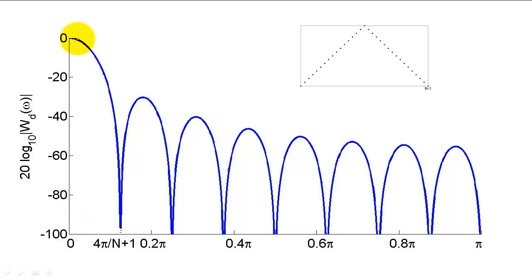As you can see, the height of the side lobes shrunk considerably, but the width of the main lobe widened. Unfortunately, no matter what window we use, we will always have to trade decreasing the height of the side lobes for increasing the width of the main lobe.